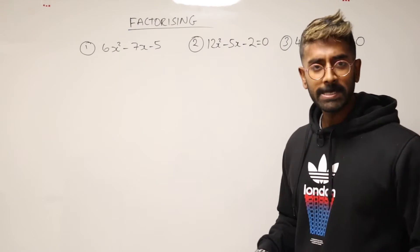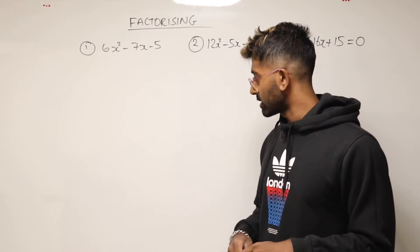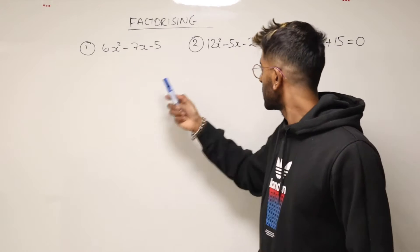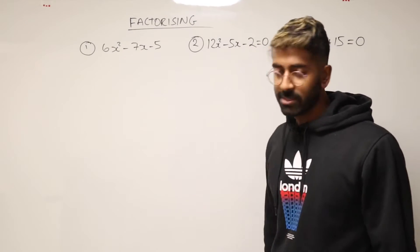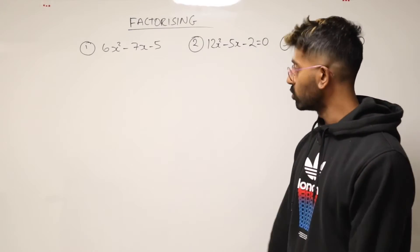Okay, welcome back to the channel. Now we've got to do some factorising today. So whenever you've got coefficients of x squared that are not one, people start finding it a bit difficult. So what on earth do we do?